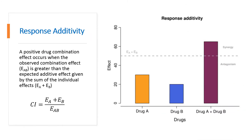The response additivity approach, also referred to as linear interaction effect, consists in showing that a positive drug combination effect occurs when the observed combination effect is greater than the expected additive effect given by the sum of the individual effects. The combination index can be calculated as shown here, and the corresponding p-value is given by the significance of the interaction effect in a factorial analysis of variance of the individual and combination effects. A major limitation of the response additivity model is the fact that it assumes drugs have linear dose-effect curves with zero intercepts, which is generally not the case as most dose-effect curves are characterized by logistic or curvilinear shapes.